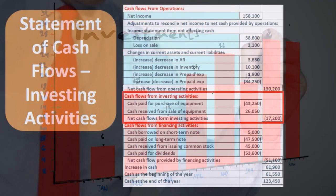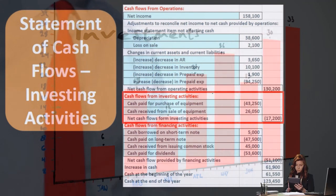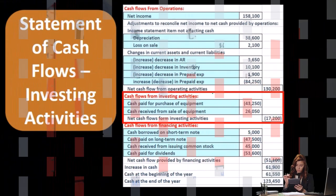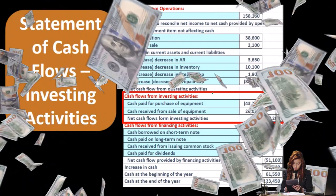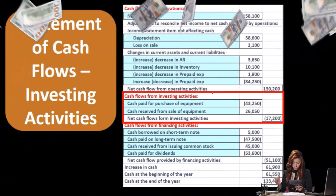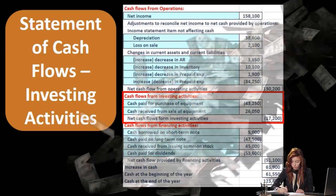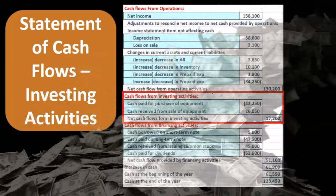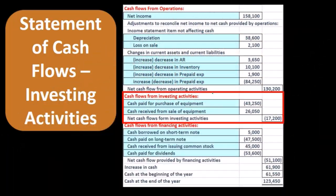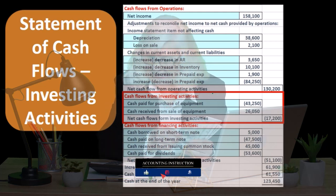Cash flows from investing activities would include those things we would assume in investing activities, including things like investing in other companies — stocks and bonds — as well as receivables from investments, traditional investments we might think of from an individual standpoint. Also included in investing activities, which can be a bit tricky in terms of terminology, will be investments in property, plant, and equipment. When we put money into property, plant, and equipment — say we buy a machine or machinery — that is an investment, a form of investment.